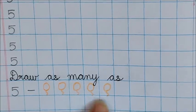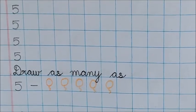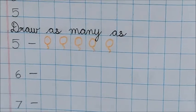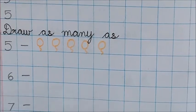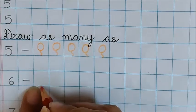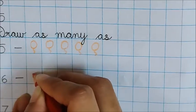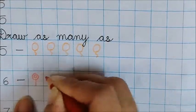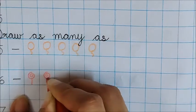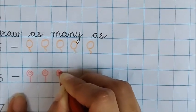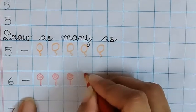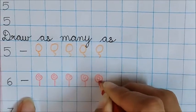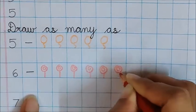So I have drawn 5 balloons for number 5. Now our next number is 6. So for number 6 I am going to draw, let me think, lollipops. In the first box after the dash I am going to draw lollipops. 1 lollipop, 2, count and draw, 3, 4, 5, 6.